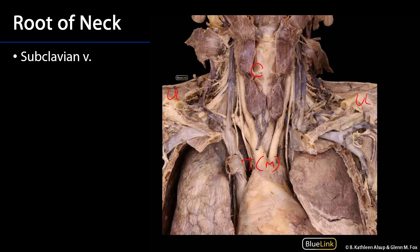The only concrete boundary between any of these regions is that of the first ribs. It's at rib one, or upon rib one, that we have the root of neck. Below rib one, coming through that superior thoracic inlet, we're in the superior mediastinum. The boundary as we move superiorly from rib one between the root of neck and neck is less distinct, and as we move laterally, even less distinct.